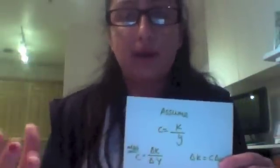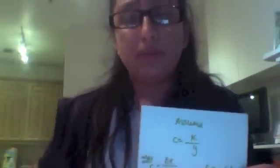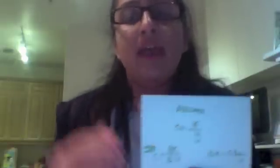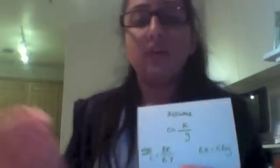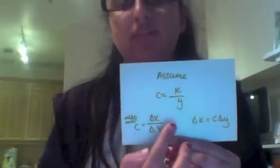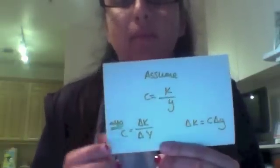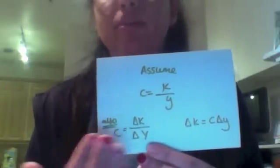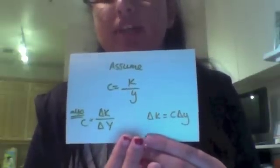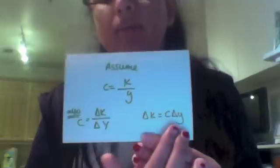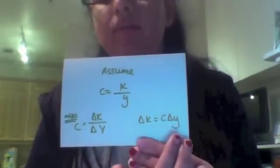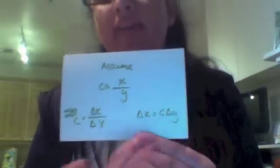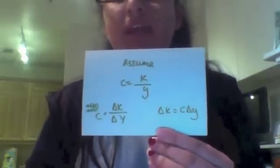Assumption number four: there is a direct relationship between capital stock and income, so capital stock divided by income gives you the capital-output ratio (K/Y = c). Rearranging, this also equals ΔK/ΔY. Multiplying both sides by ΔY gives ΔK = c·ΔY. Since investment is defined as changes in K, we get: Investment = c·ΔY.